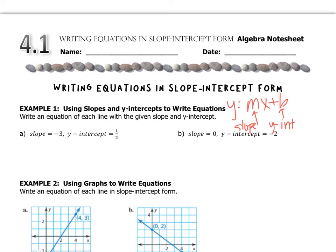So very simply, in Example 1a, if the slope is negative 3 and the intercept is 1 half, it's y equals negative 3x plus 1 half. And that's it. That's the equation.